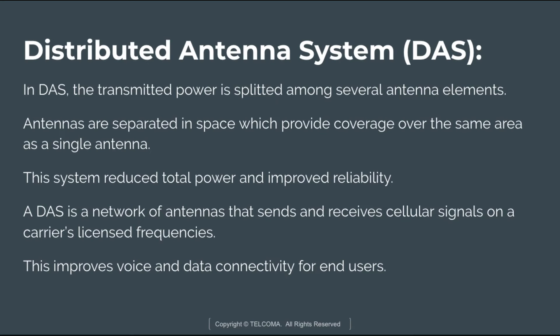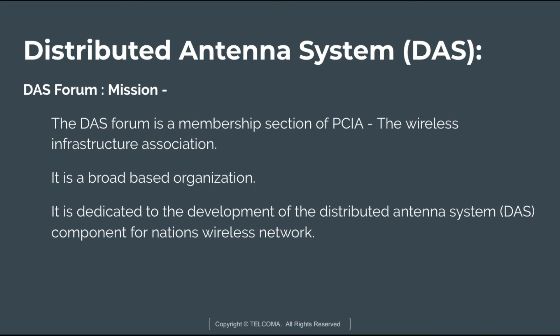In DAS, the transmitted power is separated among several antenna elements. A single antenna radiating at high power is replaced by a group of low-power antennas to cover the same area. The antennas are separated in space, providing coverage over the same area as a single antenna. This system reduces total power and improves reliability. A distributed antenna system is a network of antennas that sends and receives cellular signals on carrier-licensed frequencies, improving voice and data connectivity for end users.